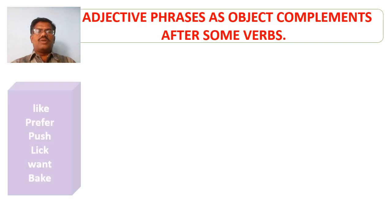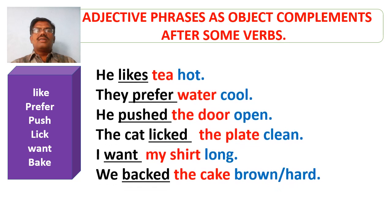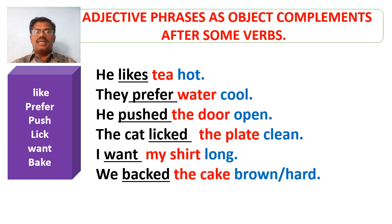Here are some more verbs with which adjective phrases can be used as object complements. The verbs are underlined in the sentences and the adjective phrases used as object complements are marked in blue ink. They include: hot, cool, open, clean, long, brown, hot. The objects are marked in red ink.